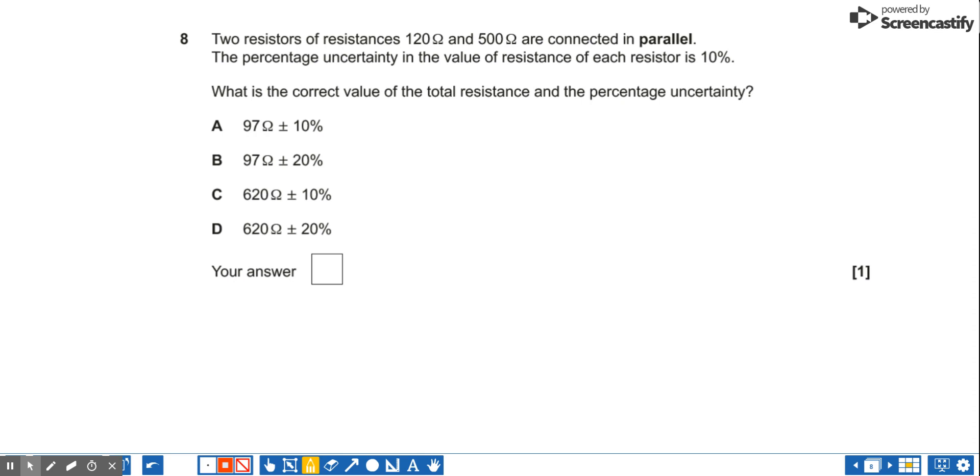Two resistors of resistances 120 ohms and 500 ohms are connected in parallel. The percentage uncertainty in the value of resistance of each resistor is 10%. What is the correct value of the total resistance and the percentage uncertainty?